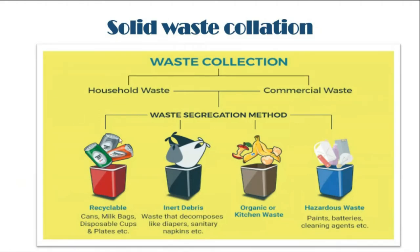At the household or commercial level, we should separately collect recyclable materials like cans, milk bags, or disposable cups. Inert debris — non-recyclable items like diapers, sanitary pads, and napkins — should be collected separately in polythene bags and kept separate from other materials. Organic or kitchen waste that is biodegradable can go for composting at home. Hazardous waste like paints, batteries, and cleaning agents should also be collected separately. If this segregation is done properly by material category, our solid waste management will definitely improve.